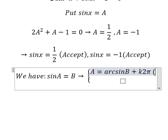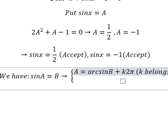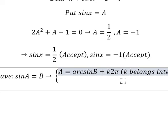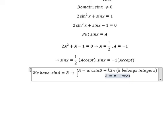And the next formula: A equals π minus arcsin(B) plus k times 2π.